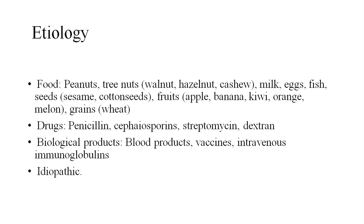Causes include food, drugs, biological products, and idiopathic causes. Foods include peanut, tree nut, walnut, hedge nut, cashew nut, milk, egg, fish, seed, some fruits, and grains. Drugs include penicillin, cephalosporine, streptomycin, and dextran. Biological products include blood products, vaccines, and intravenous immunoglobulins.